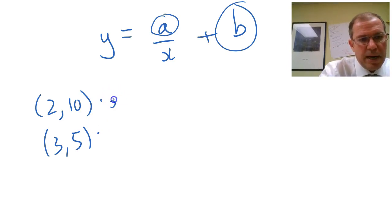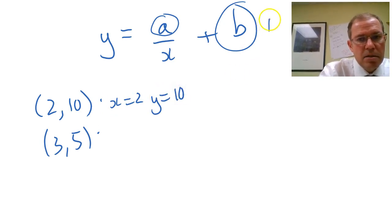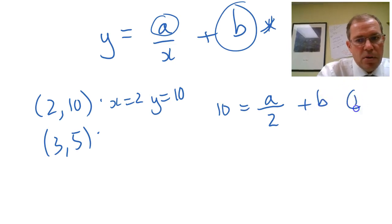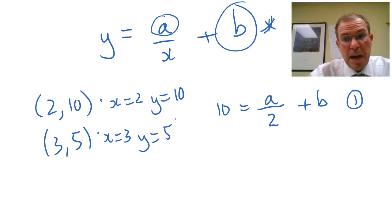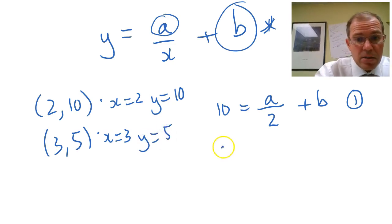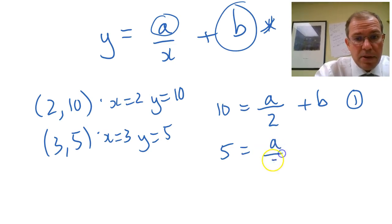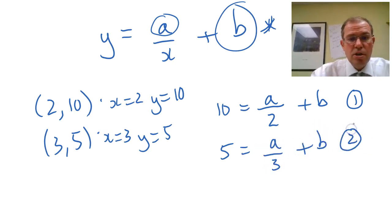Well 2, 10 means clearly that when x is 2, y equals 10. So let's sub that into my equation, which I'll call star there. So when I put y is 10 in, I get 10 equals a over 2 plus b, and I've got equation 1 there. Let's do the same. Clearly here when x is 3, y is 5, let's pop that back into star again. So it's 5 equals a over 3 plus b, and I'll call that equation 2.